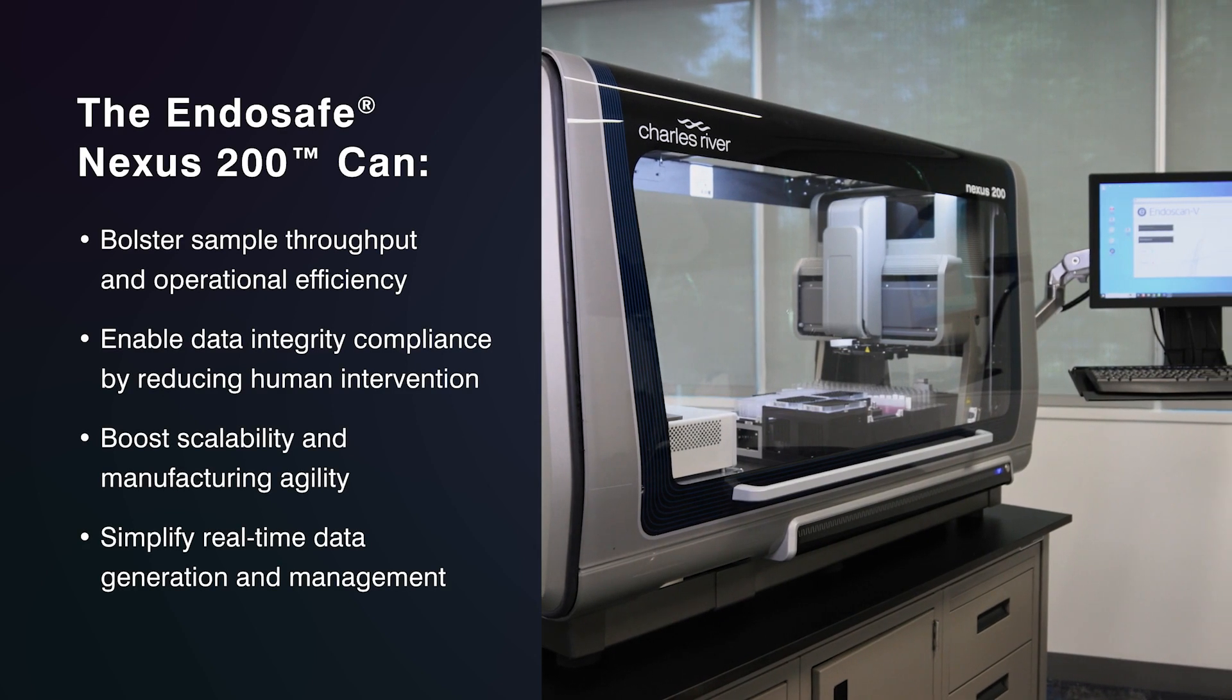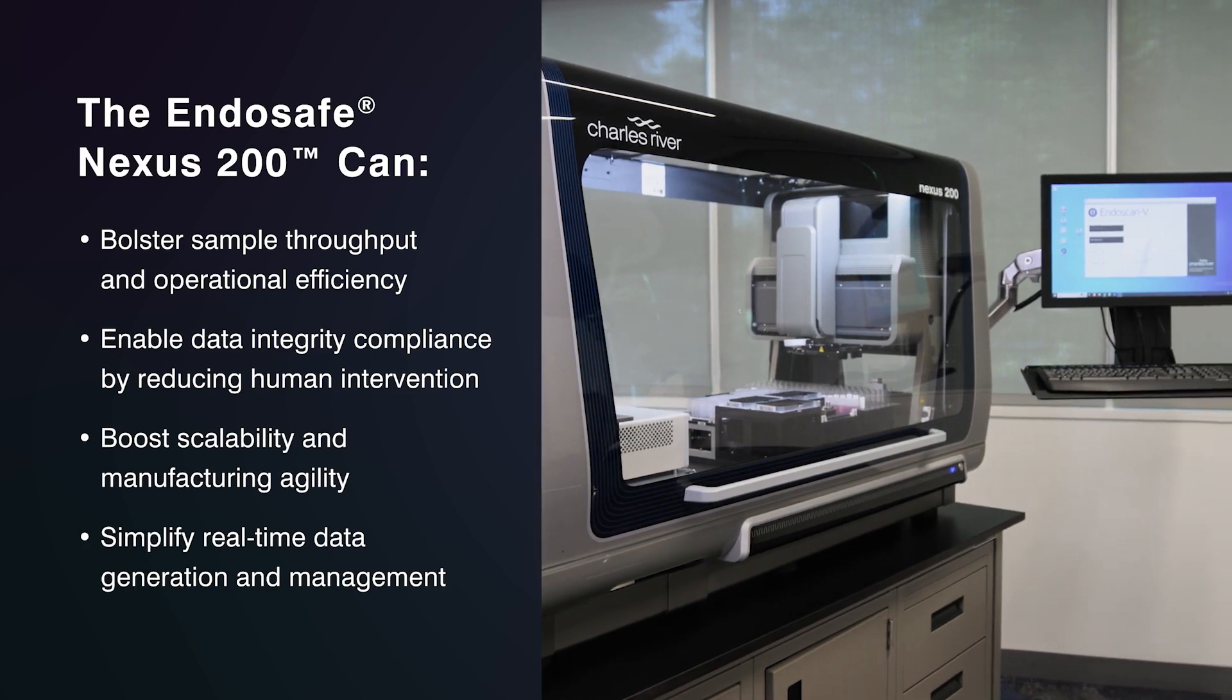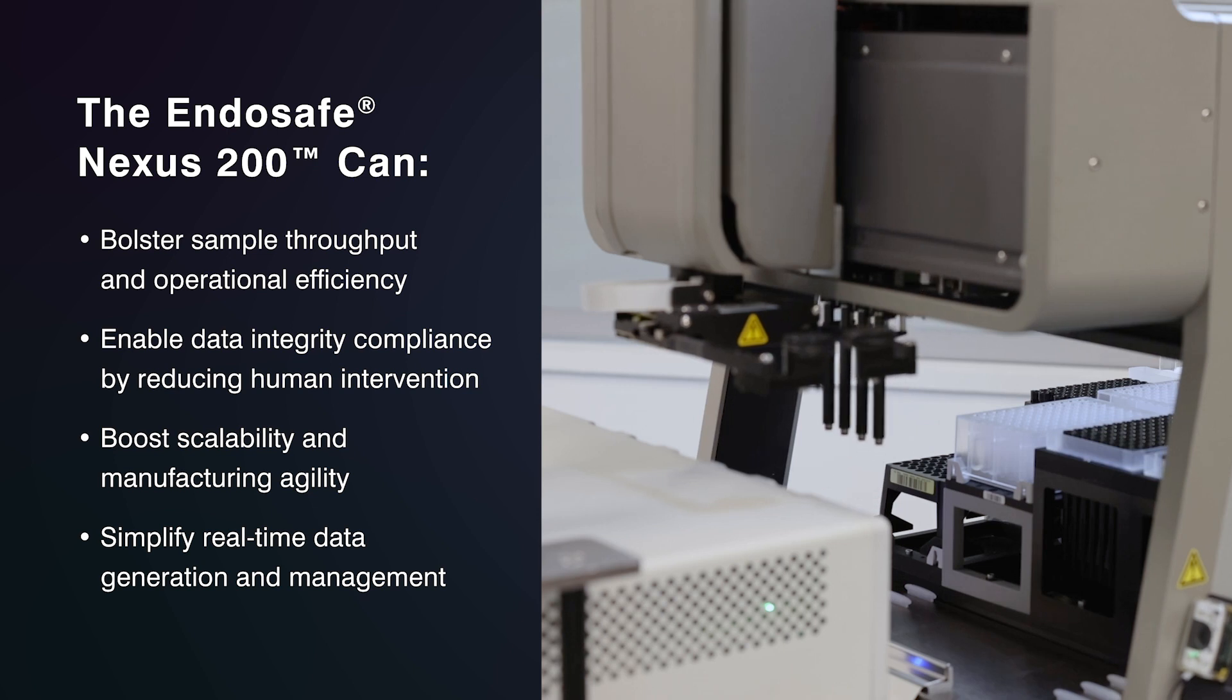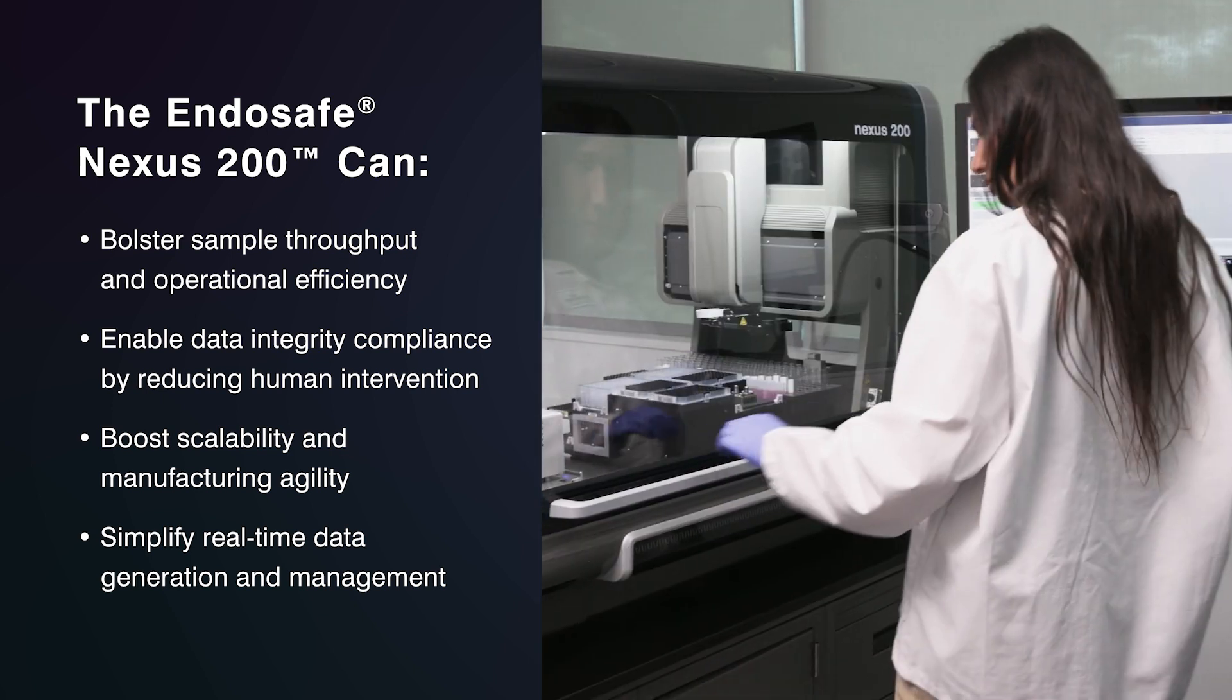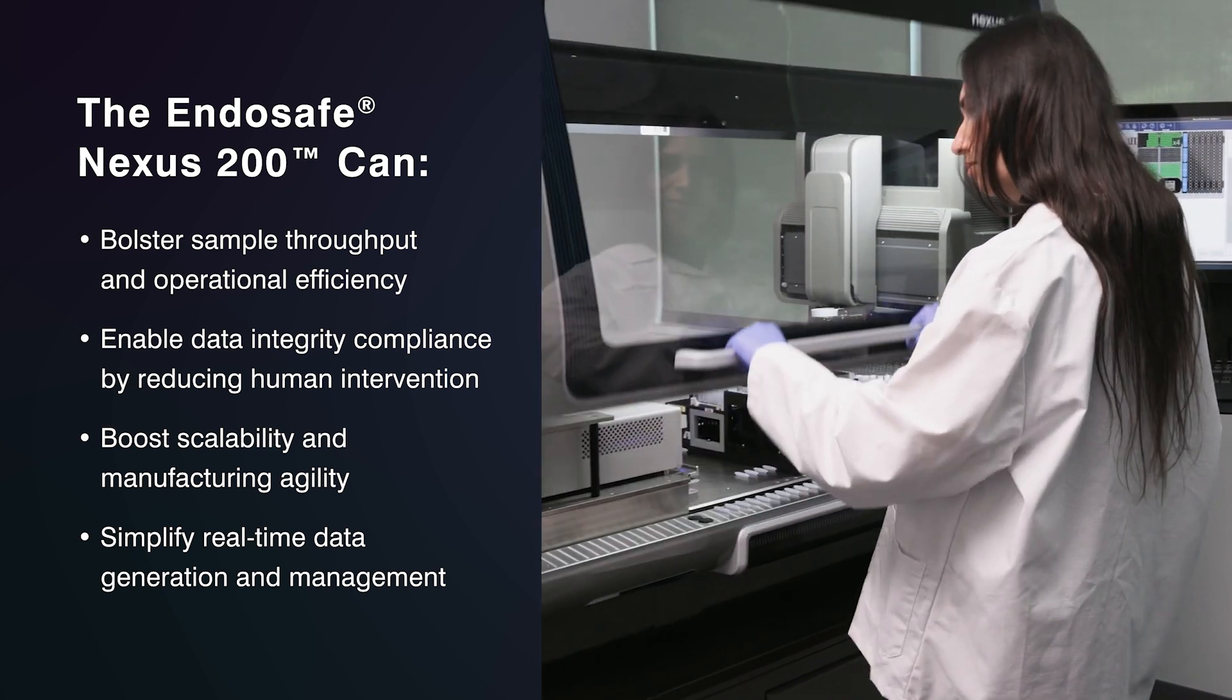With the implementation of the Nexus 200, you can lower coefficient of variations, reduce ergonomic issues, free up analysts, eliminate human error, and reduce standard curve variability – all while increasing your manufacturing agility in an easy, walk-away system.